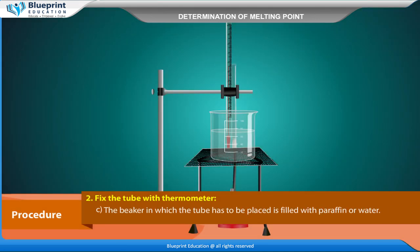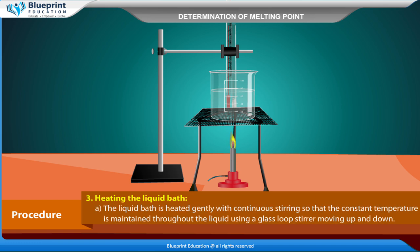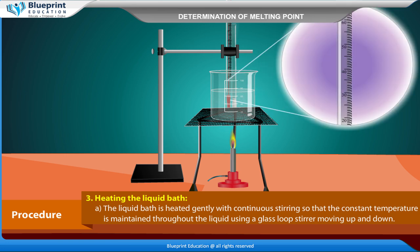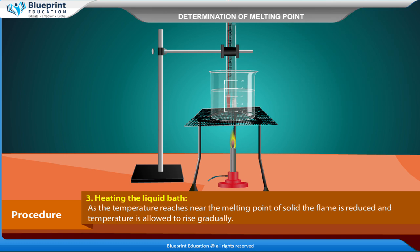The beaker is filled with paraffin or water. Heating the liquid bath: the liquid bath is heated gently with continuous stirring so that a constant temperature is maintained throughout the liquid, using a glass loop stirrer moving up and down. As the temperature reaches near the melting point of the solid, the flame is reduced and the temperature is allowed to rise gradually.